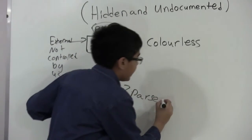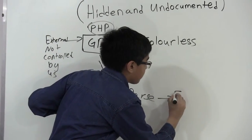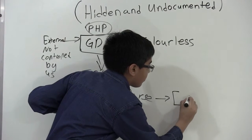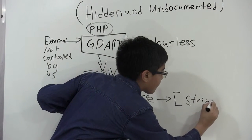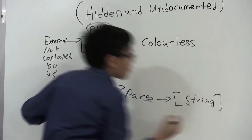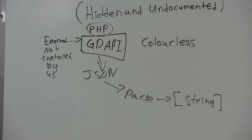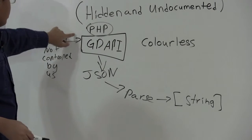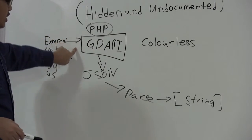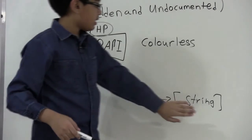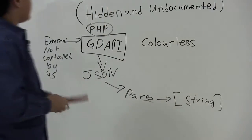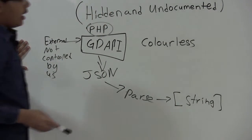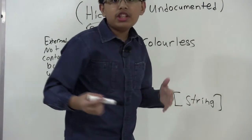Once we get the JSON we parse it with Swift, and after parsing we get an array of strings. So that's basically how this will work — it goes from the Google Dictionary API through a lot of steps and comes out as an array of strings.